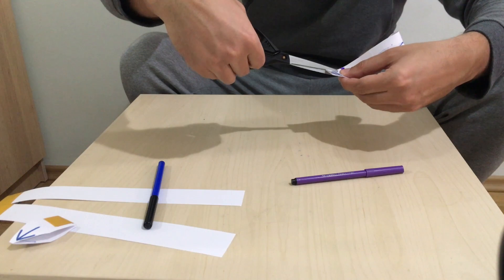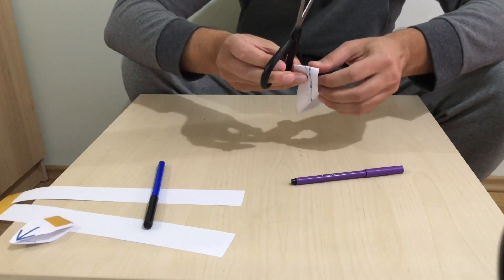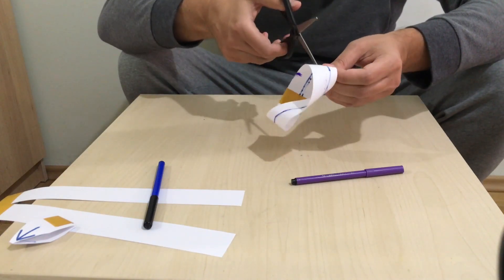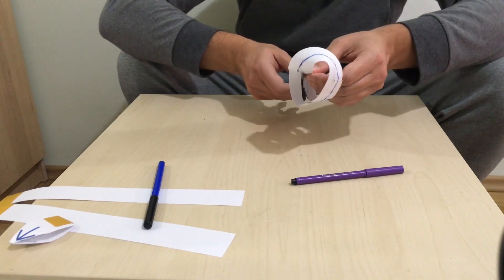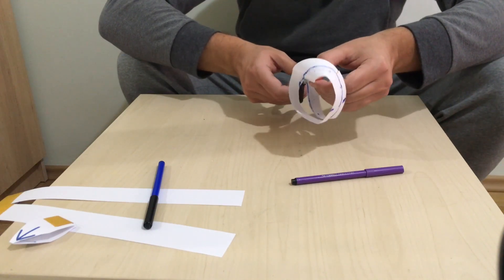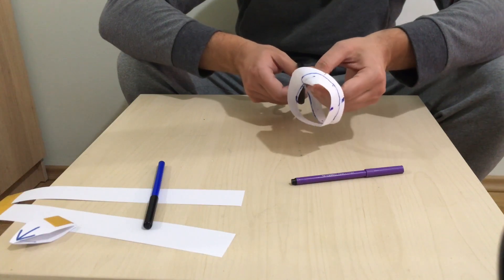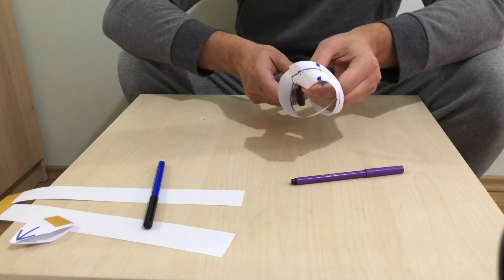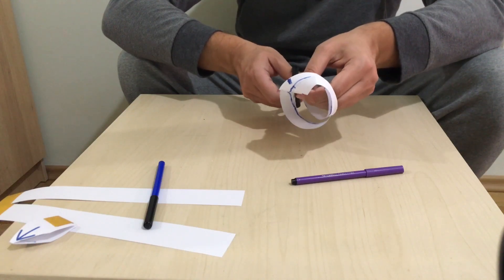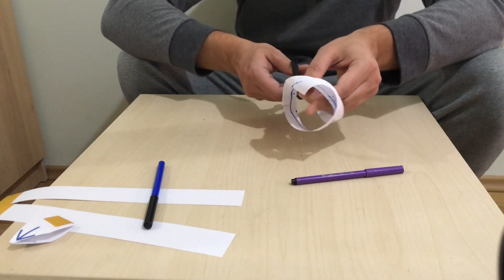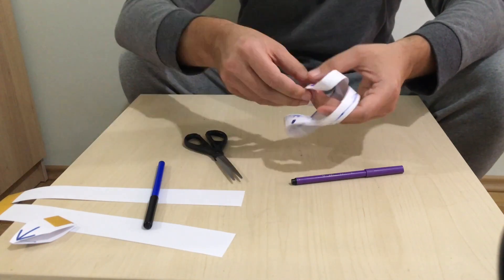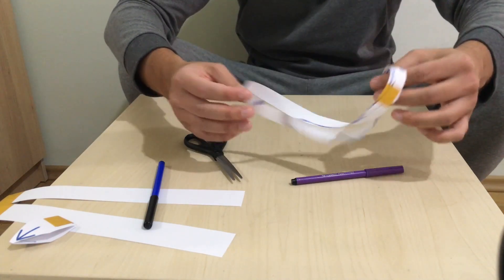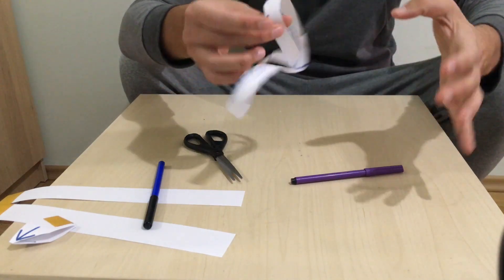Then I'll put the scissors inside the Möbius stripe and try to follow the line in the middle, cutting all the way through the Möbius stripe to see what will happen. Can you guess? Probably I'll have two Möbius stripes, or I'll have one stripe that is no longer a Möbius stripe but is double twisted.